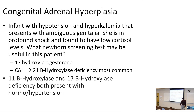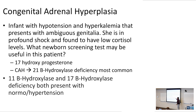Remember, 11-beta-hydroxylase deficiency and 17-beta-hydroxylase deficiency are part of the same pathway in your adrenal cortex. They're a little lower yield, but these deficiencies present with normal or hypertension. The way I like to remember it: if it has a one in the first digit, it's going to have hypertension.